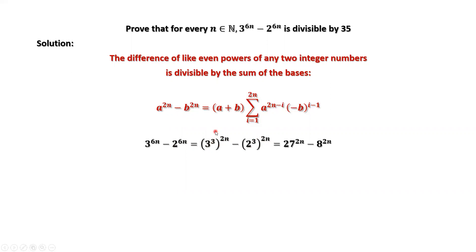3 to the power 3 is 27. 2 to the power 3 is 8. Now we can use this formula. We have 2n here, 2n here. They are the same powers, same even powers. Now we can apply this formula.